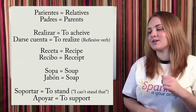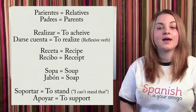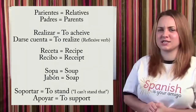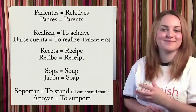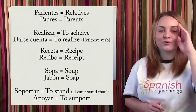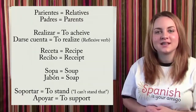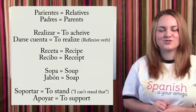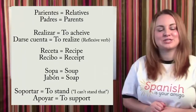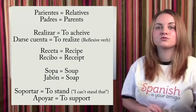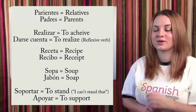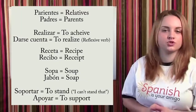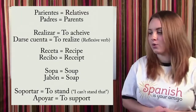Next word is receta. This word looks like it should be receipt, but it's not. Receta means recipe. And the real word for receipt is recibo. Next word is sopa. Sopa looks like it should be soap, but it's soup. The word for soap is jabón — J-A-B-O-N.